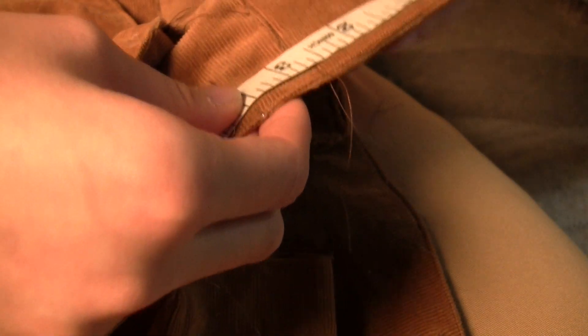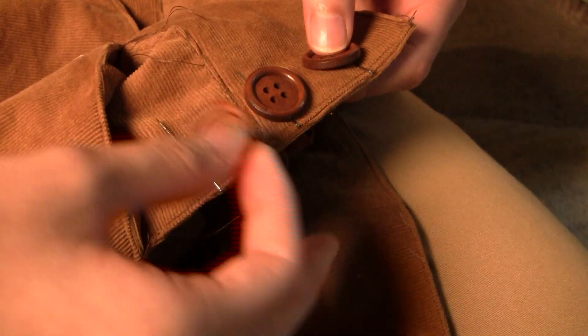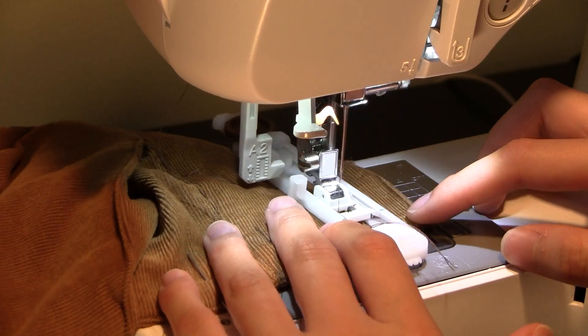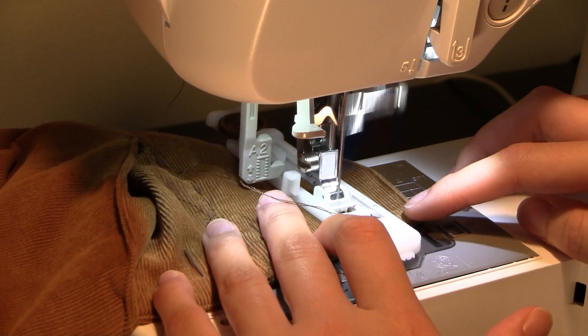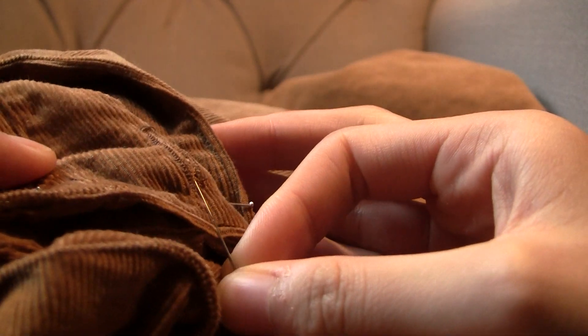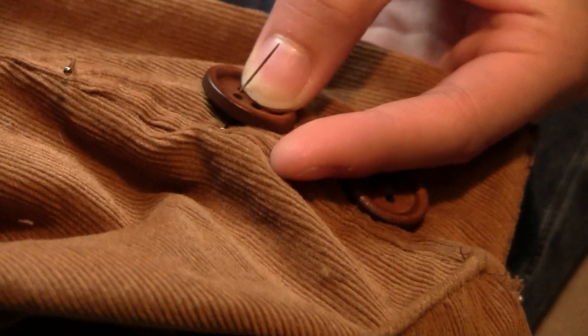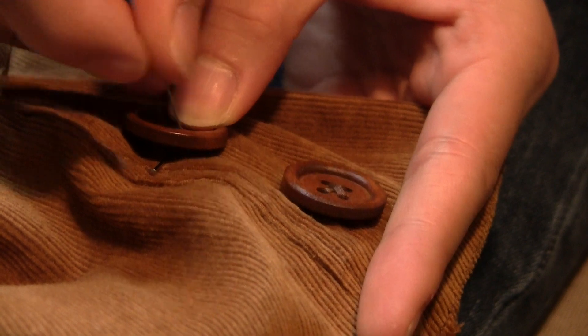I sewed on buttonholes next, using the buttons I plan to use for scale and spacing. Thankfully, I didn't mess up any of these buttonholes. Again, I sewed the buttons to the back placket. I got these really cheaply off Amazon, they're just standard whitem buttons.